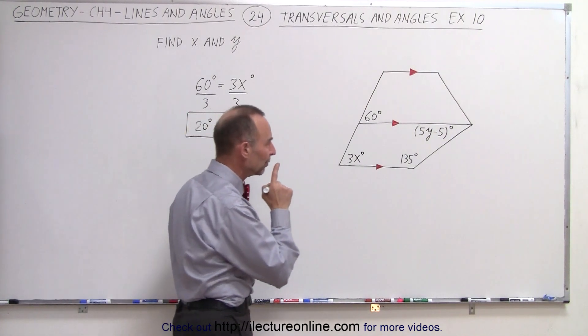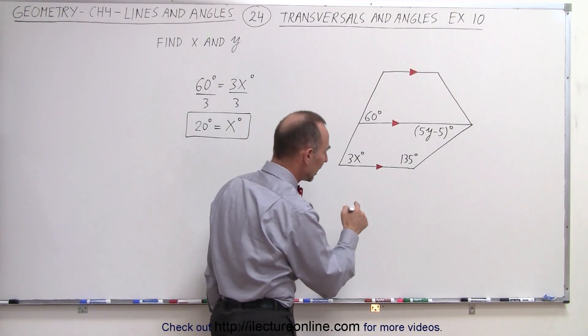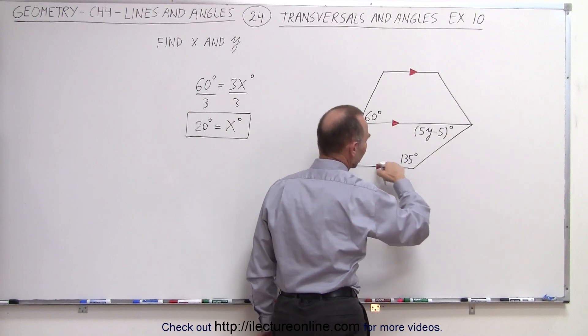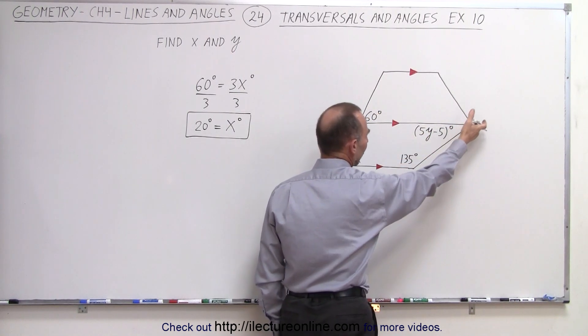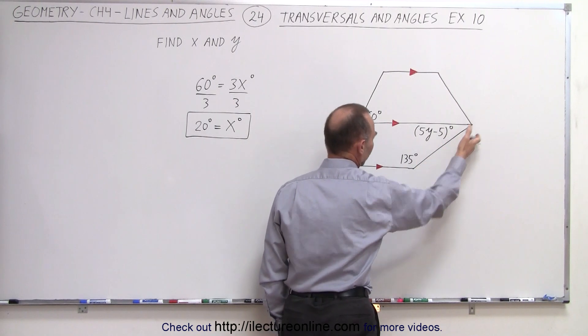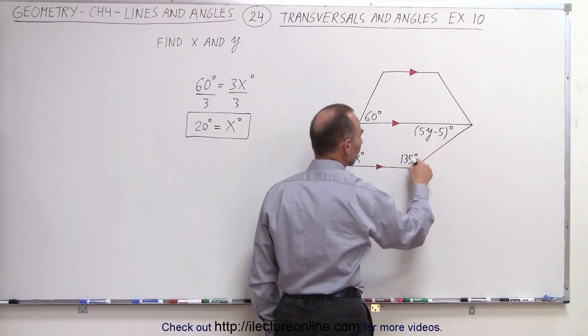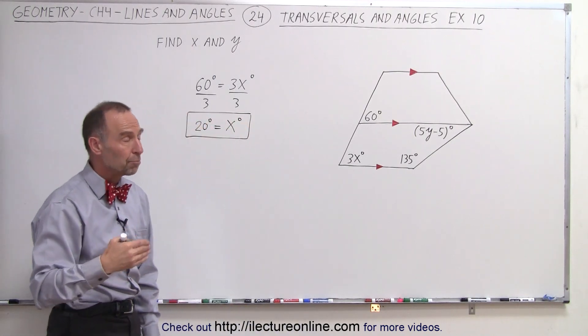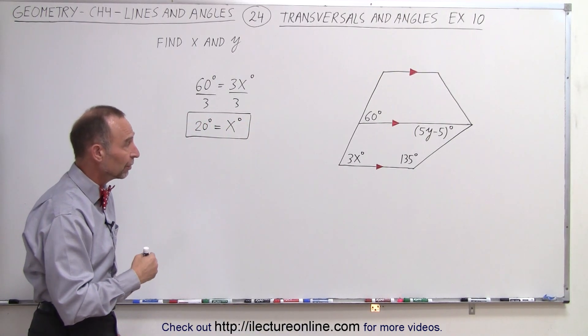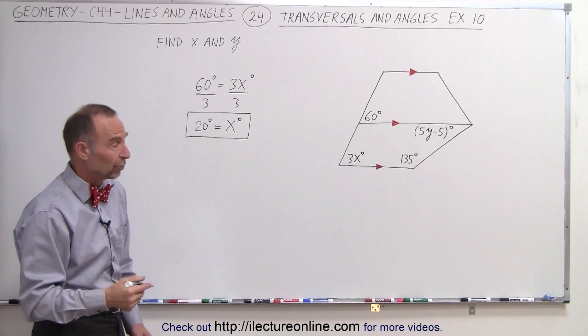But what about y? How do we find y? Well again, we can take a look at these two lines right here and realize that they are indeed parallel to one another. And then we have this line here, which is a transversal, which makes these two angles two consecutive interior angles. And we know that the measure of two consecutive interior angles add up to 180 degrees.